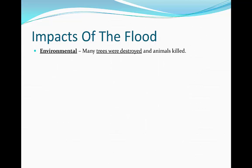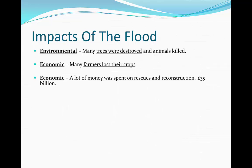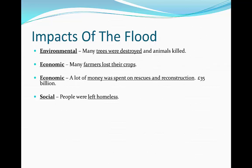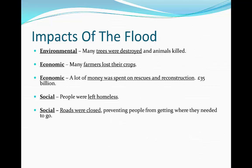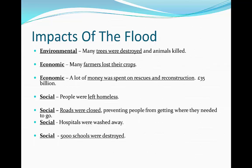Impacts of the flood. One of the environmental impacts is that many trees were destroyed and animals killed. Many farmers lost their crops, which is very important because two thirds of all the jobs in Karachi were actually farmers. A lot of money was spent on rescues and reconstruction — £35 billion. Social impacts are that people were left homeless and roads were closed, which prevented people from getting where they needed to go. Also, hospitals were washed away and 5,000 schools were destroyed, which really affected education. Many people did die from these floods.